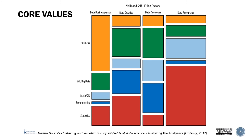The data developer tends to be a little bit more balanced. They are low on business and low on statistics, but much higher in programming and machine learning, which makes sense, and then inevitably math in order to understand the programming and the machine learning. This is more of the engineering type, whereas the data researcher is more of the classic kind of professor.